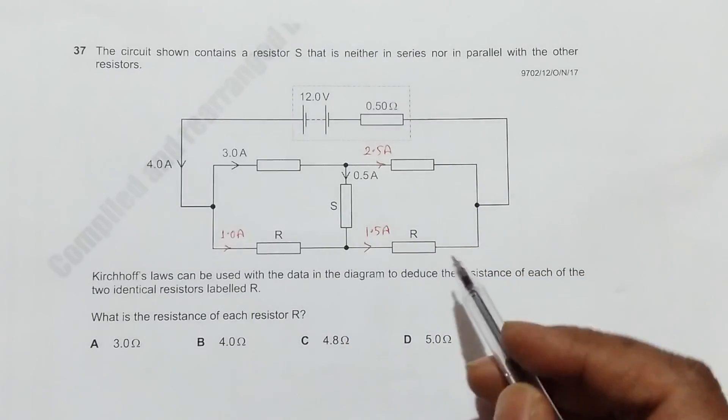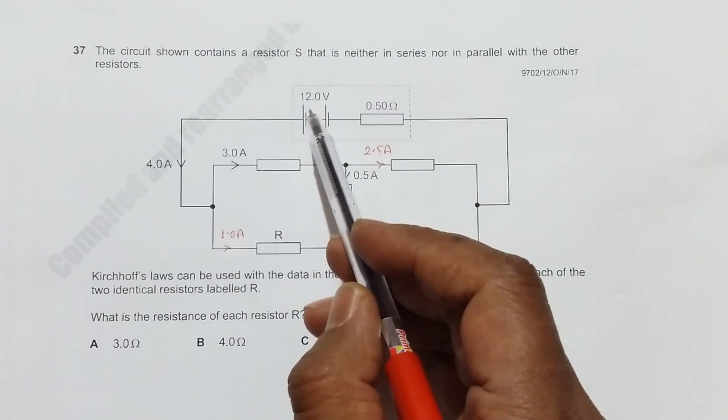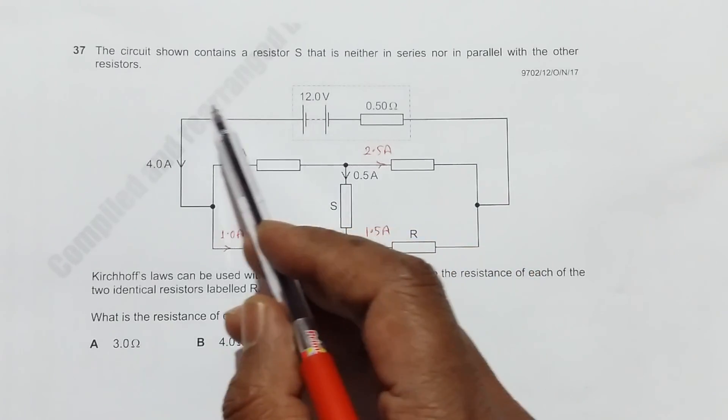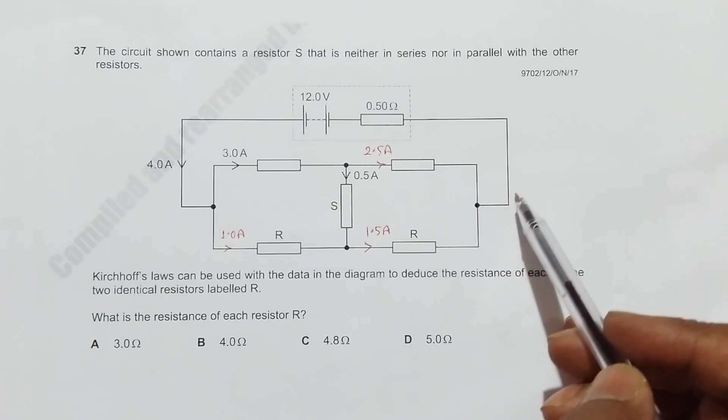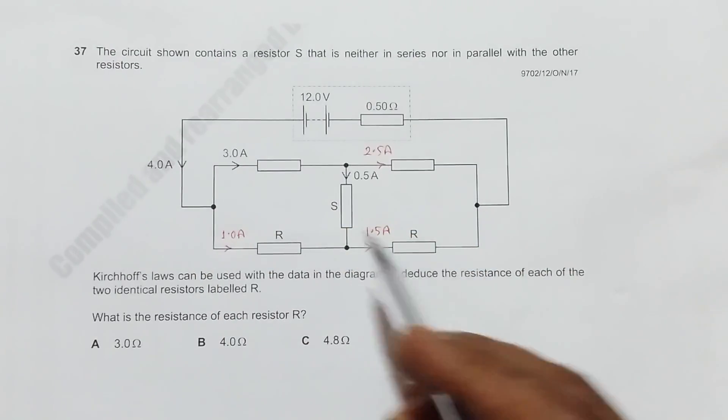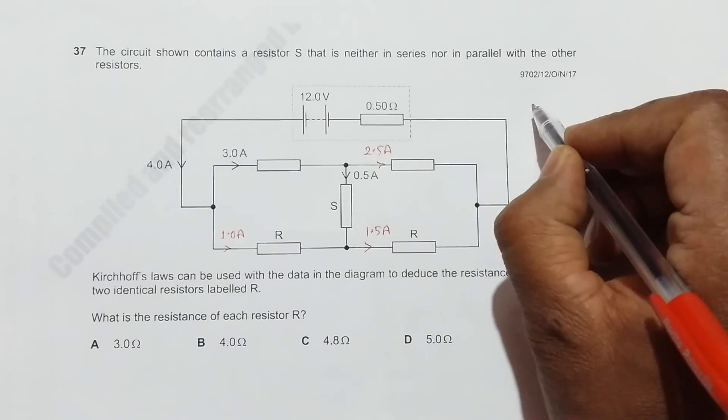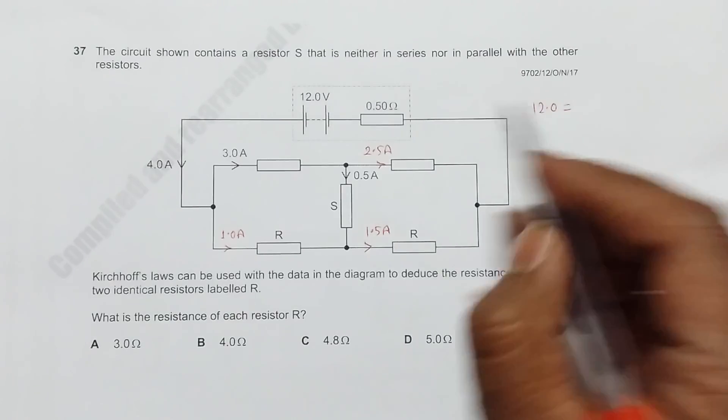Now if we apply Kirchhoff's law along this path, let's trace the path. From here it goes here, here, and here, so the loop is the outermost loop. This will give us 12.0 equals...